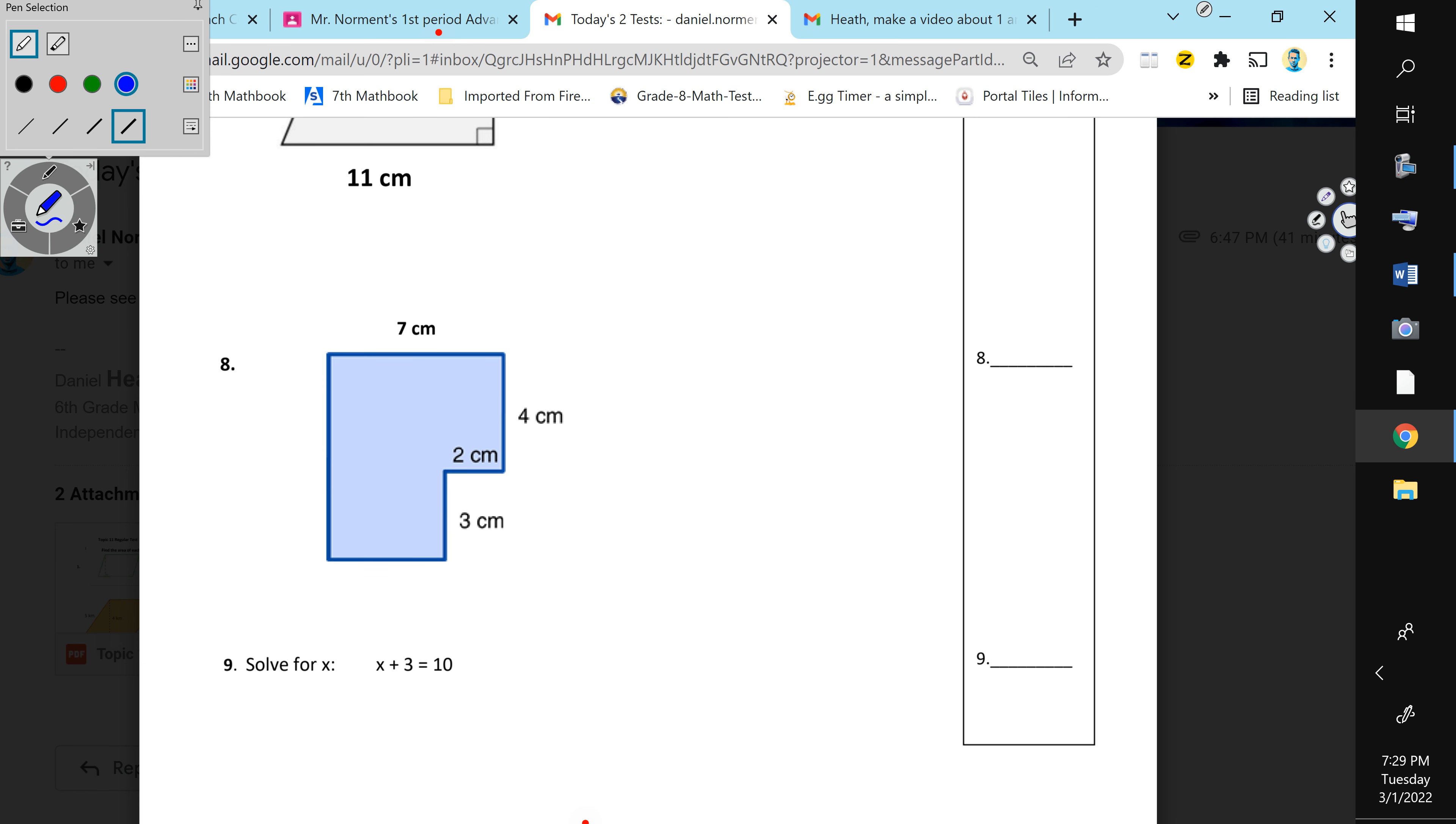Number eight. Number eight's a little bit tricky. So, what I would do for this, is I would go, let's go this way. And then this rectangle is going to be seven times four. Whatever seven times four is, is the area of that rectangle.